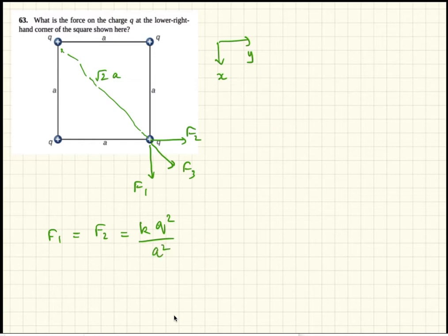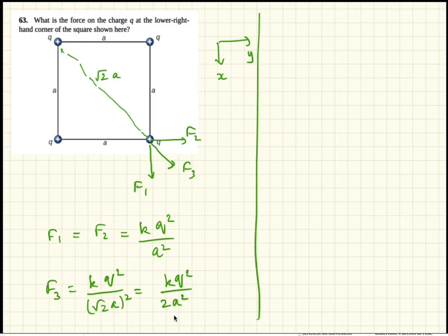And F3 is k q squared, q is the charge on each particle, divided by root 2a squared, so k q squared by 2a squared. So F3 is one half of F1 and one half of F2.